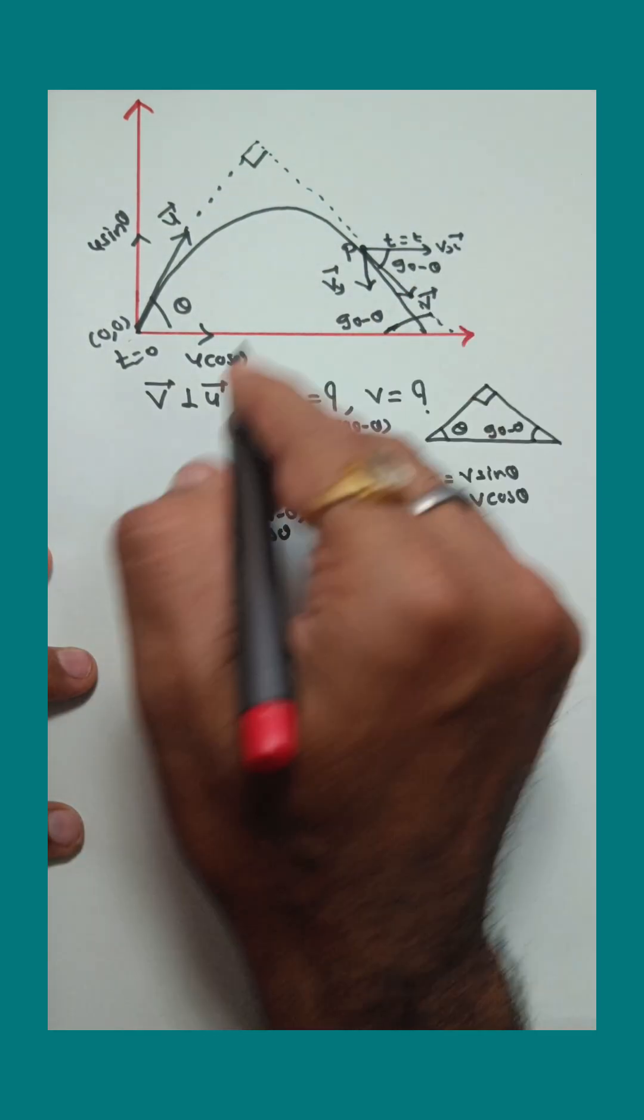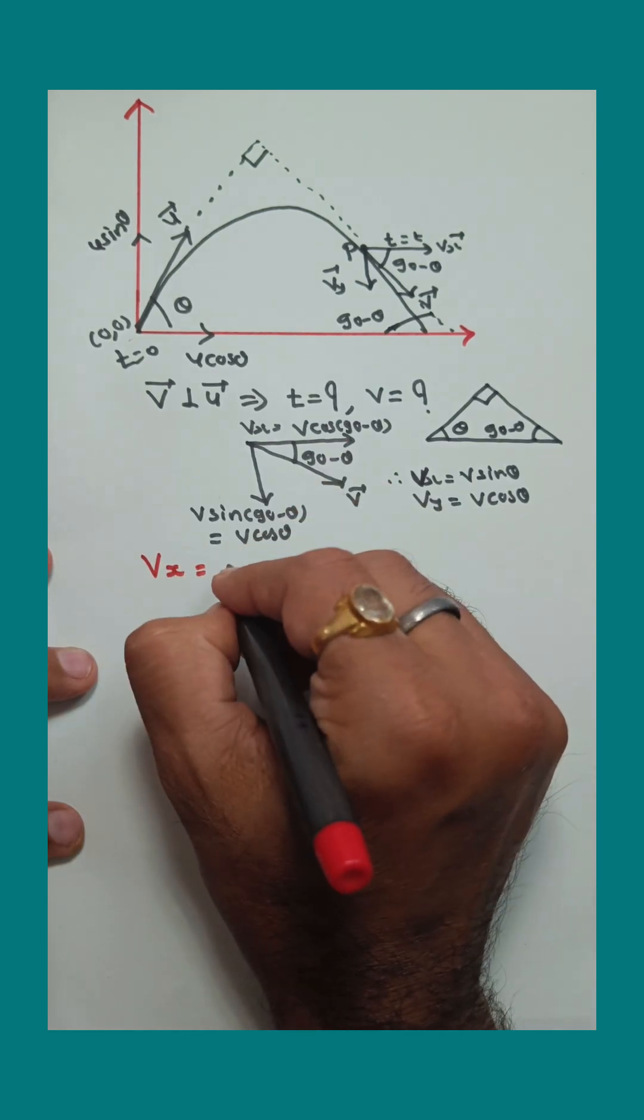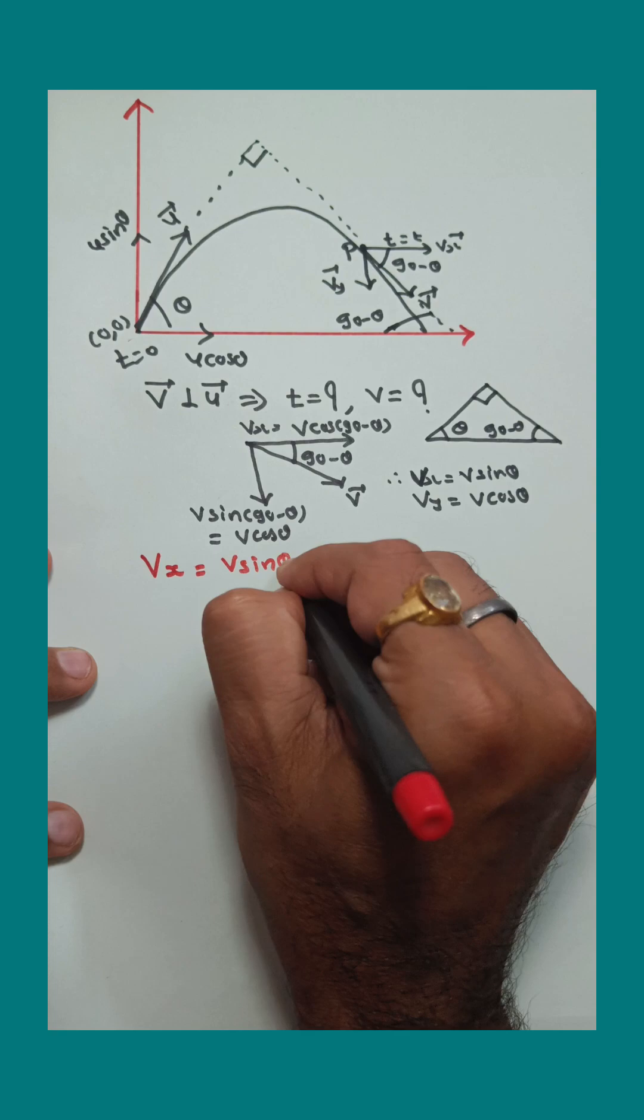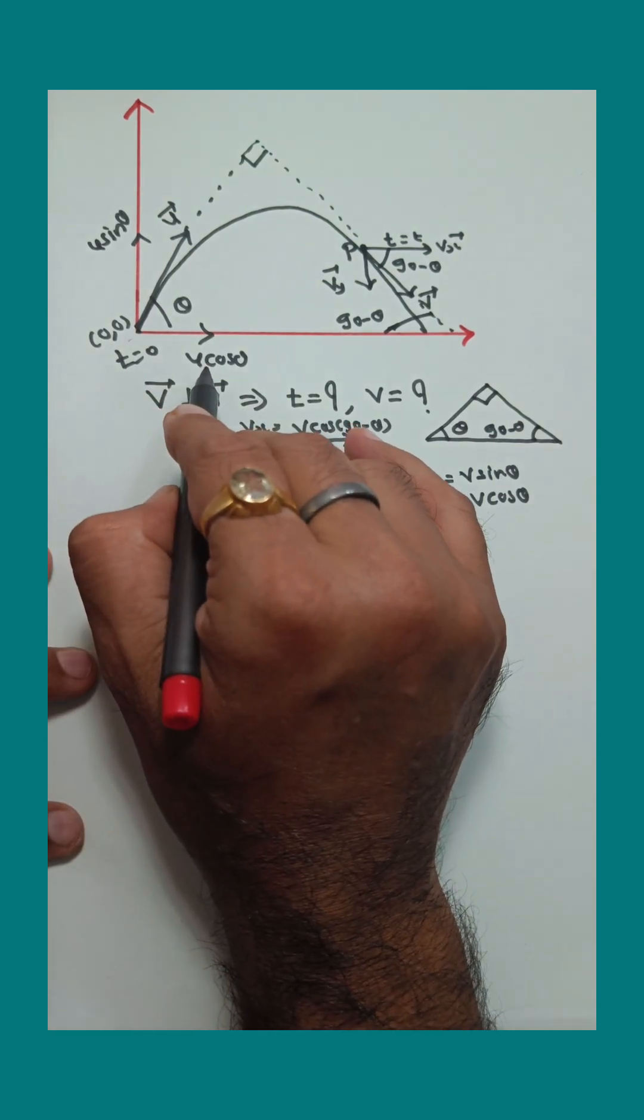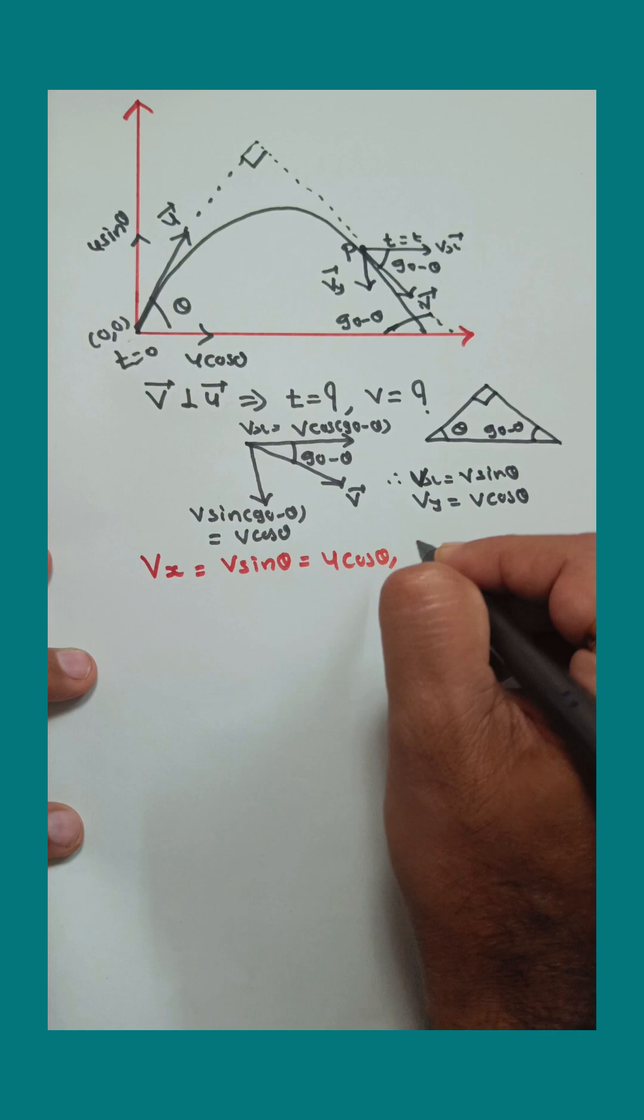Now see here, in projectile motion, the x component of velocity is constant. Here vx equals v sin theta, but the original x component of velocity is u cos theta. So v sin theta equals u cos theta.